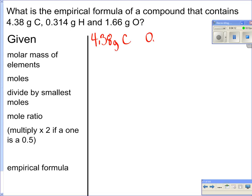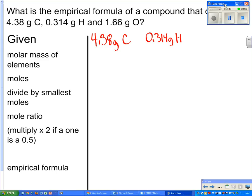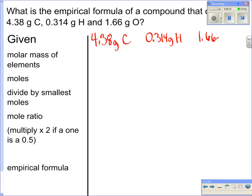So what am I given? I'm given 4.38 grams of carbon, I'm given 0.314 grams of hydrogen, and I'm given 1.66 grams of oxygen. And so again, we're going to look up the molar mass of the elements. I know that carbon is 12 grams, hydrogen is 1 gram, and oxygen is 16 grams. Just the single element is all you write down.